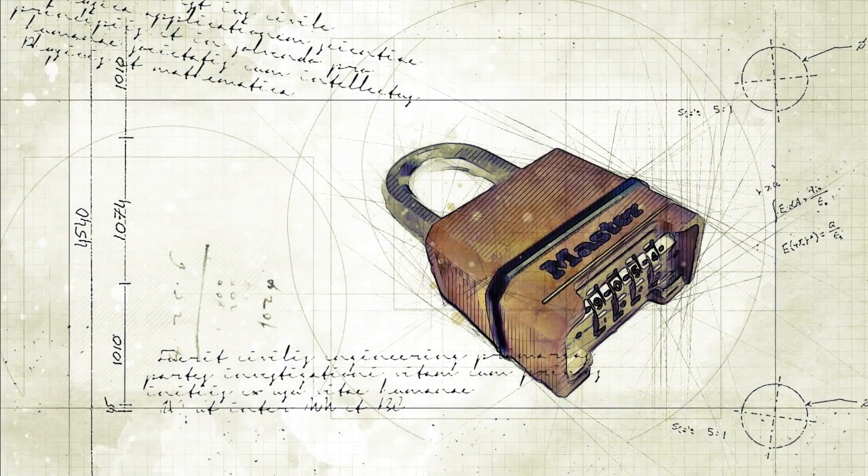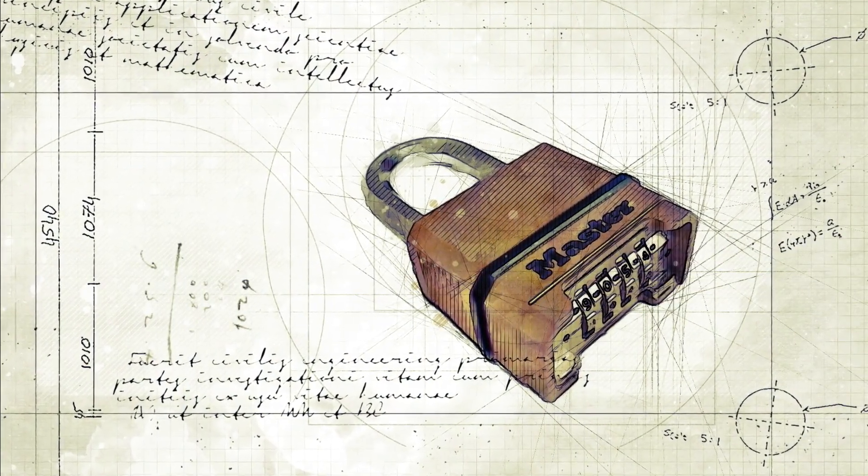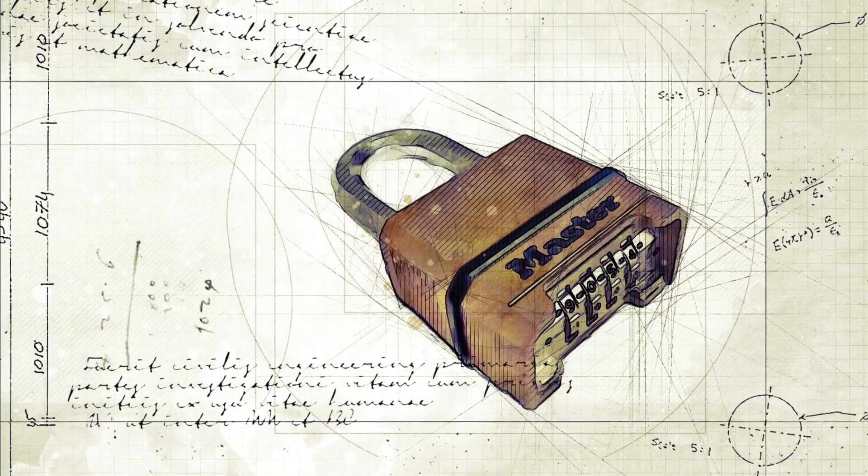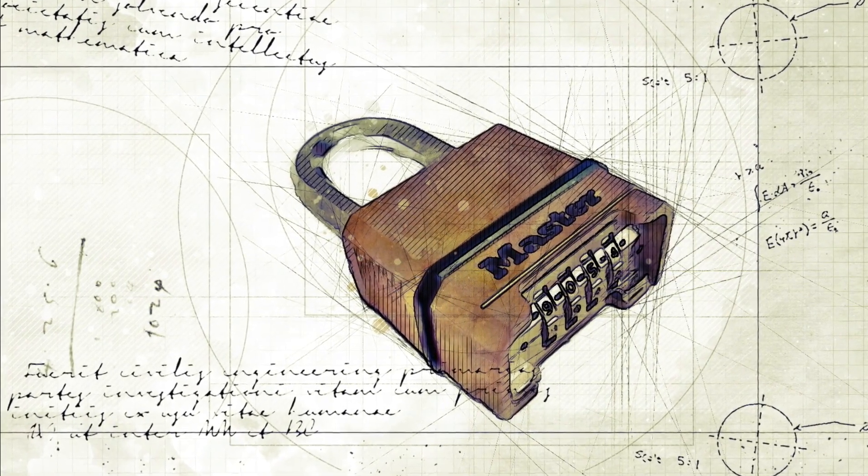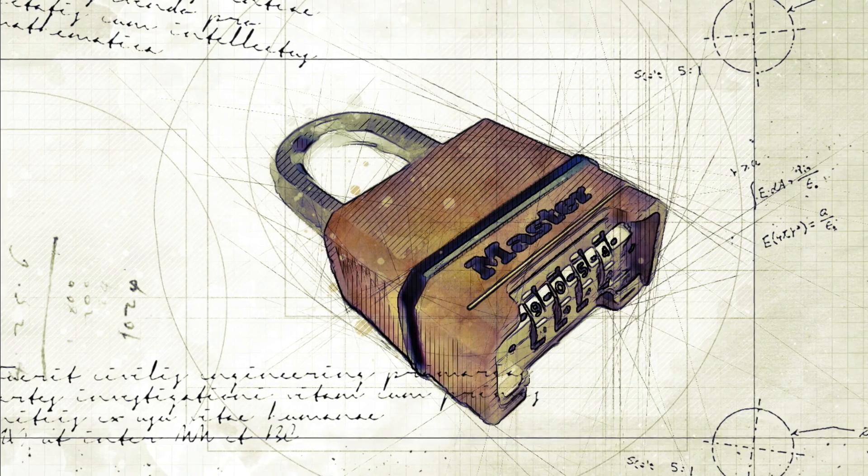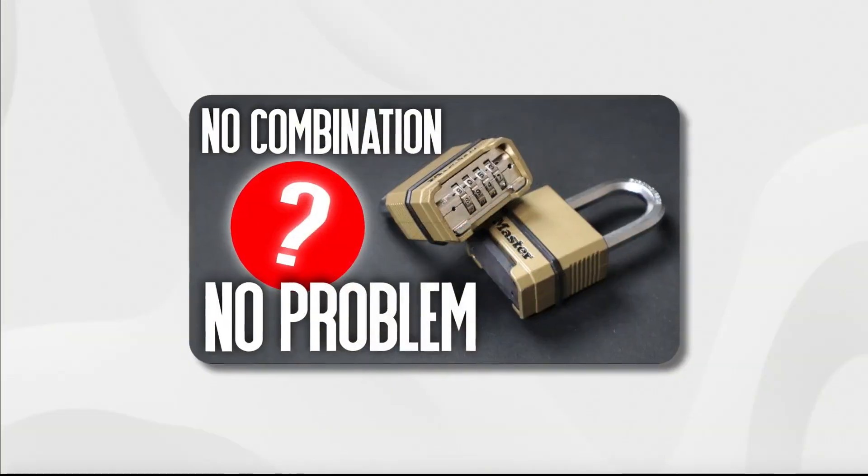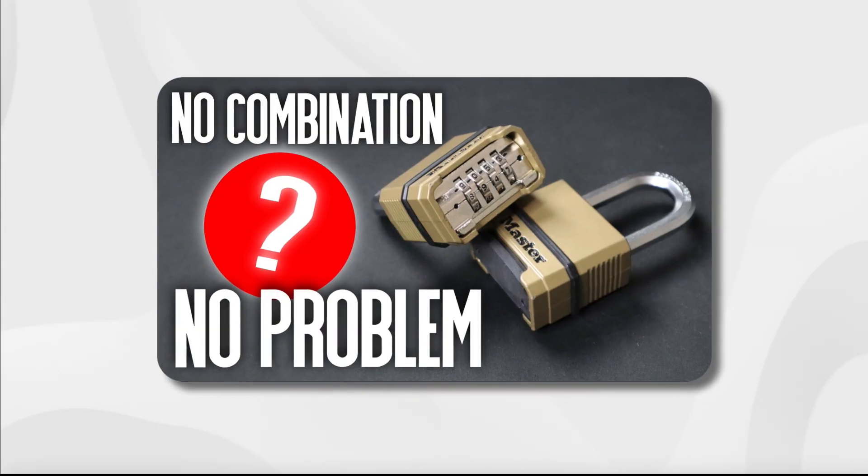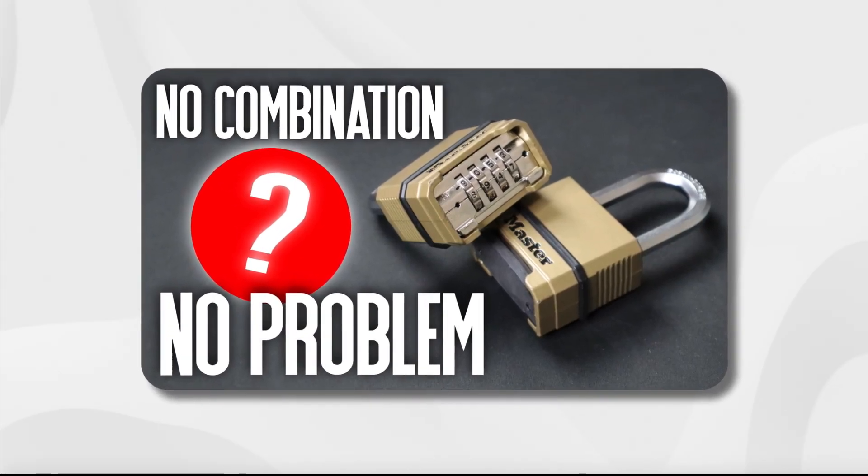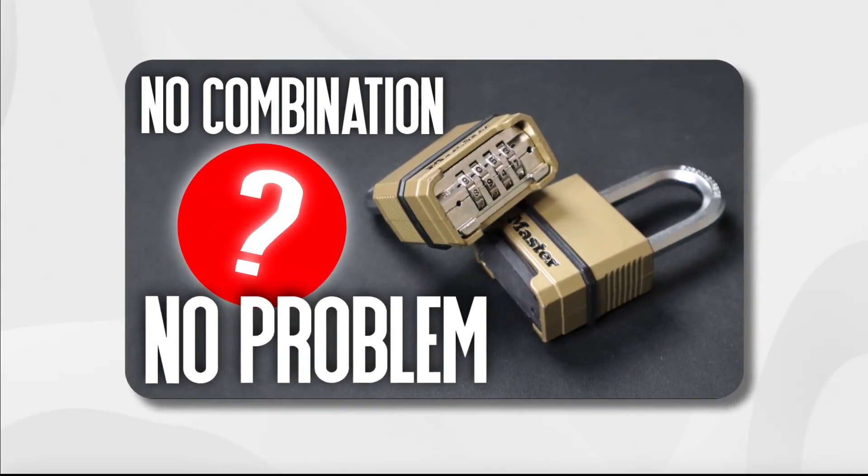I've already released a detailed tutorial on how to open the Masterlock 175 Magnum both without any tools but also using a decoder to determine the position of the gates which in turn reveals the combination code. If you haven't seen that episode I'd encourage you to do so before watching this one because it serves as a useful primer to combination lock design.